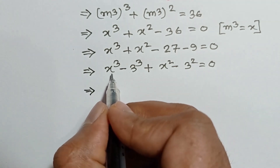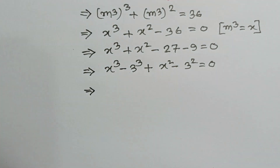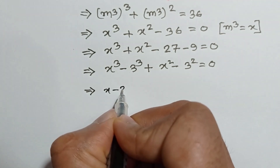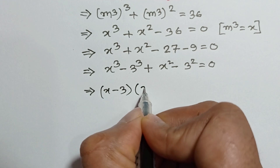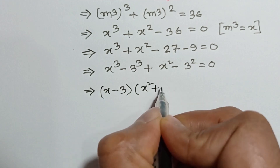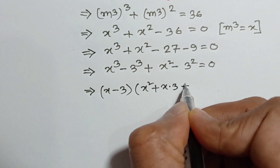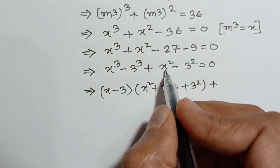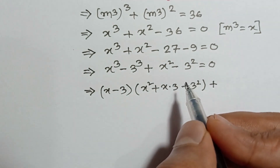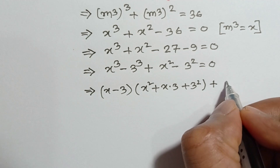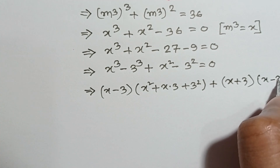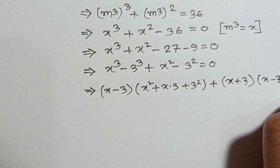Applying the formula a cubed minus b cubed equals (a minus b)(a squared plus ab plus b squared), we get (x minus 3)(x squared plus 3x plus 9). Then applying a squared minus b squared equals (a plus b)(a minus b), we get (x plus 3)(x minus 3) equals 0.